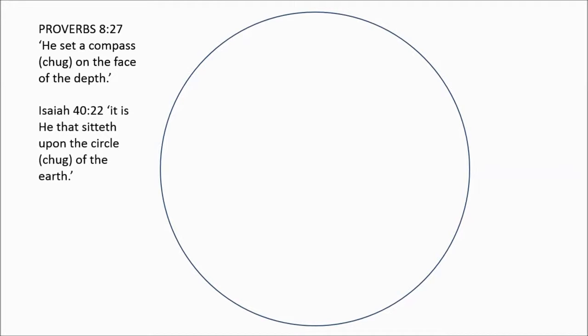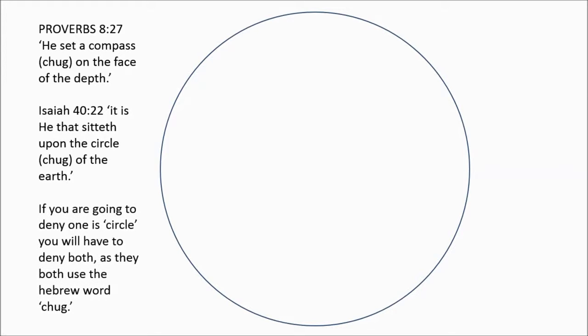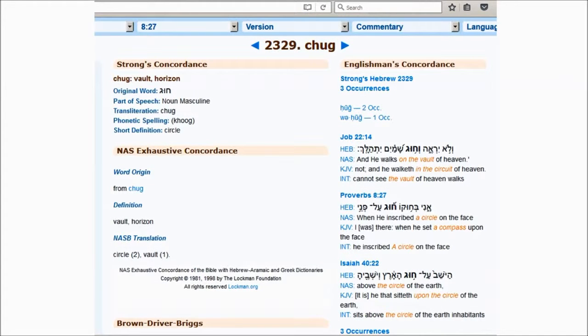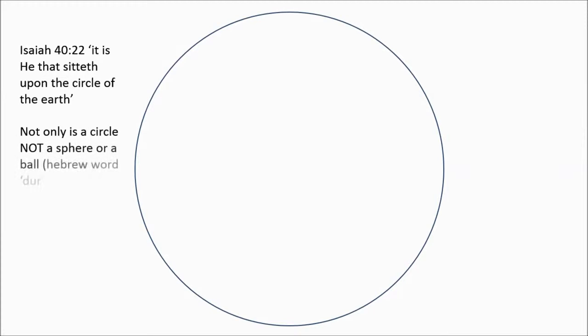Everybody knows the famous Isaiah 40:22 verse which says he sits upon the circle of the earth. It uses the same Hebrew word as Proverbs 8:27. It's exactly the same Hebrew word, so if you're going to accept one is circle, you definitely need to accept the other is circle. So where is he? Because NASA don't seem to have found him.